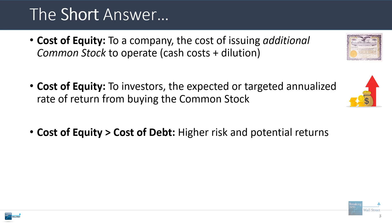The cost of equity is pretty much always higher than the cost of debt because it is riskier, and it also has higher potential returns. Common shareholders are junior to the debt investors — the lenders in the capital structure. And the interest paid on debt is tax deductible, but there are no such tax breaks for equity or common stock.